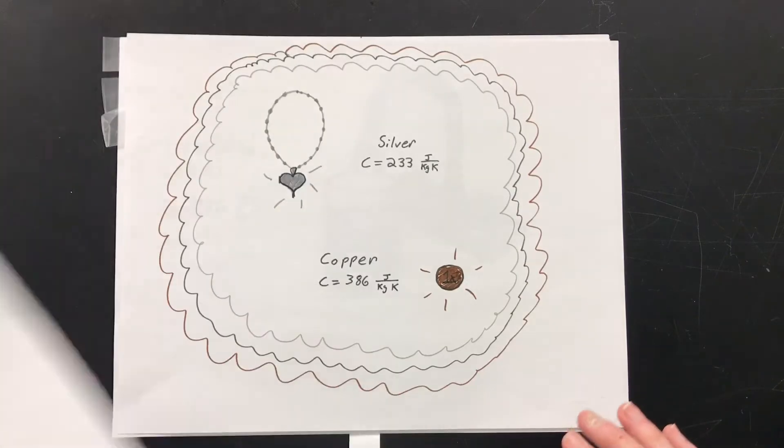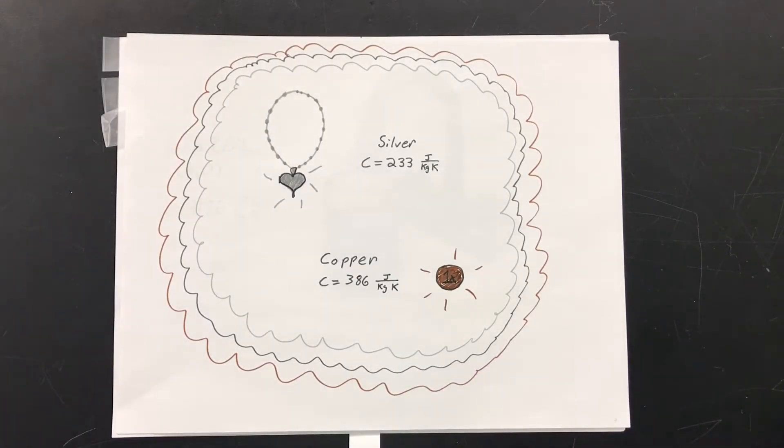Several known metals in their purest forms have specific heats between 100 and 500 joules per kilogram Kelvin. For example, the specific heat of silver is 233 joules per kilogram Kelvin, and the specific heat of copper is 386 joules per kilogram Kelvin.